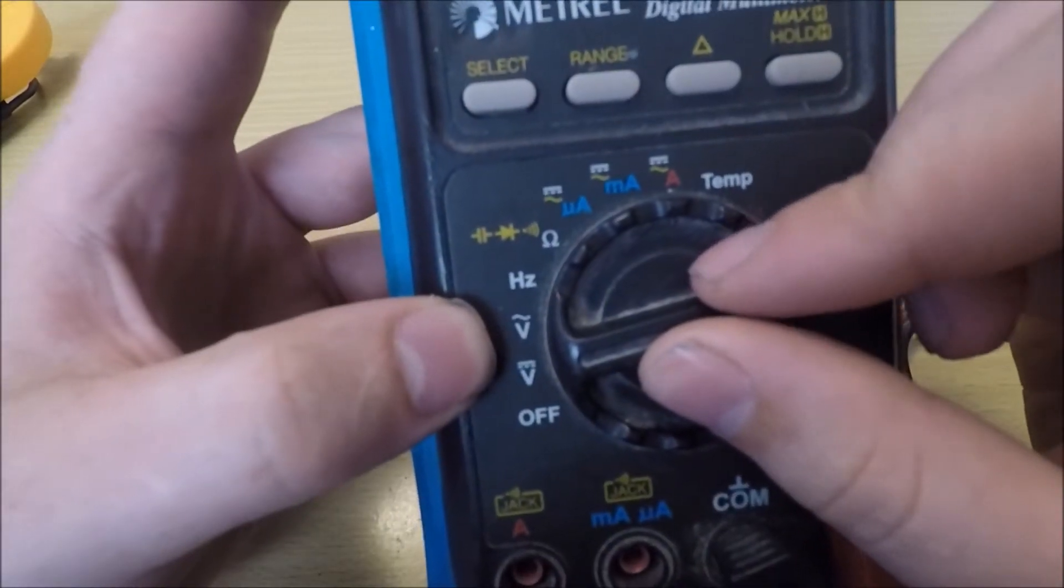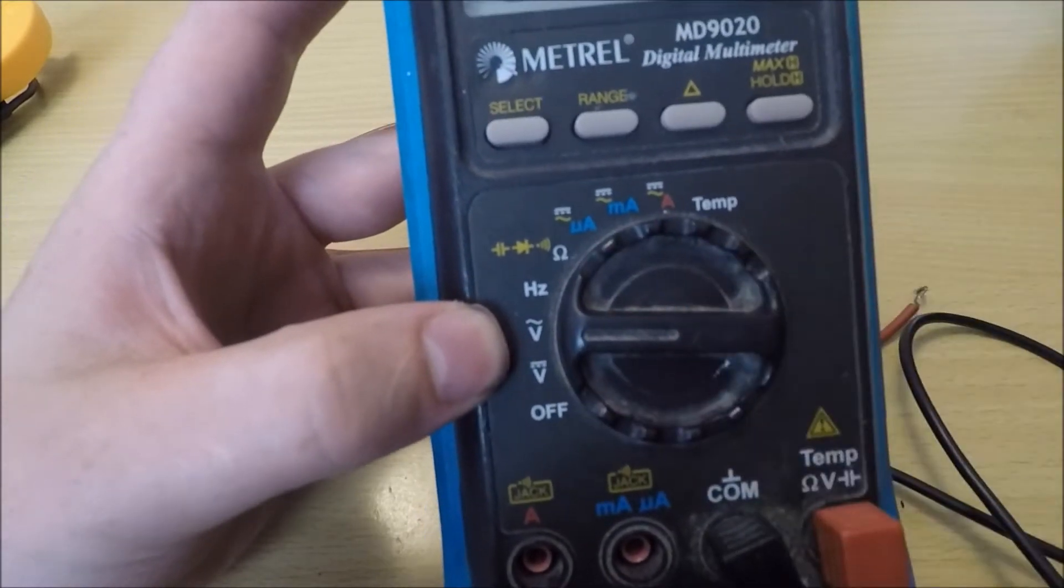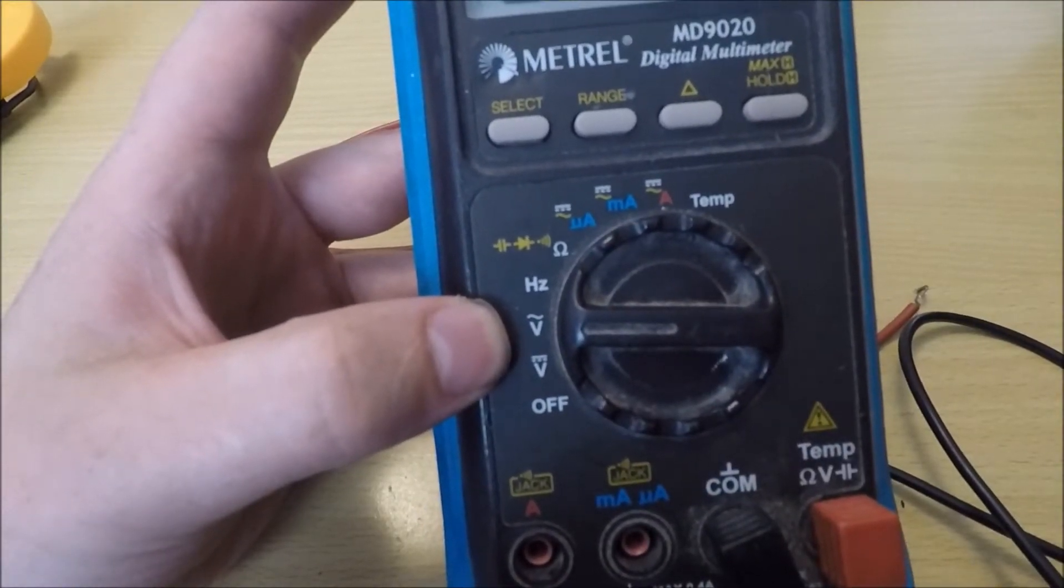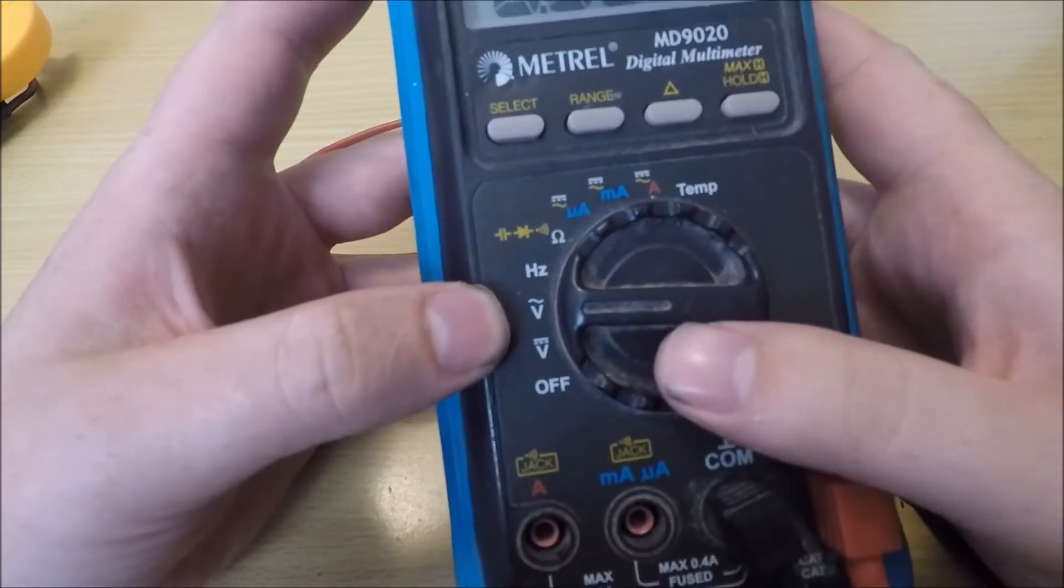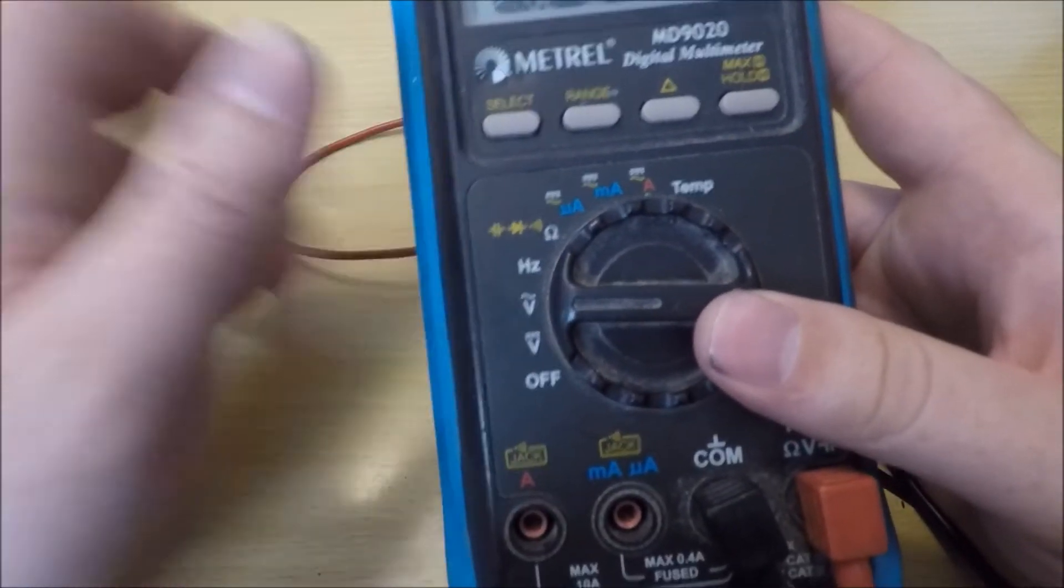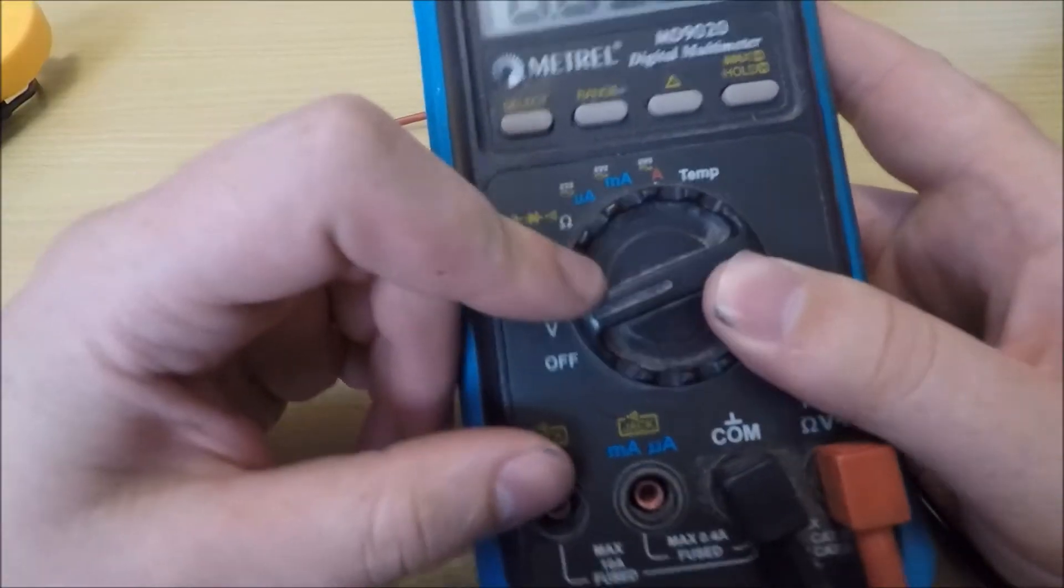The one above it, the V with that squiggly line above it, that's volts AC. This is for testing power outlets in your house, anything on the AC system, so 230 volts and above.